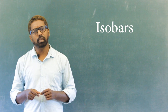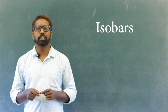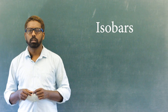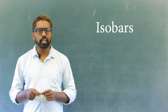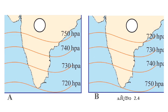We can easily understand the distribution of atmospheric pressure of any region by observing the isobars. The picture shows the distribution of atmospheric pressure of a region in two different seasons. Observe the distribution of isobars in the given figure and mark the places experiencing high pressure and low pressure as H and L respectively.